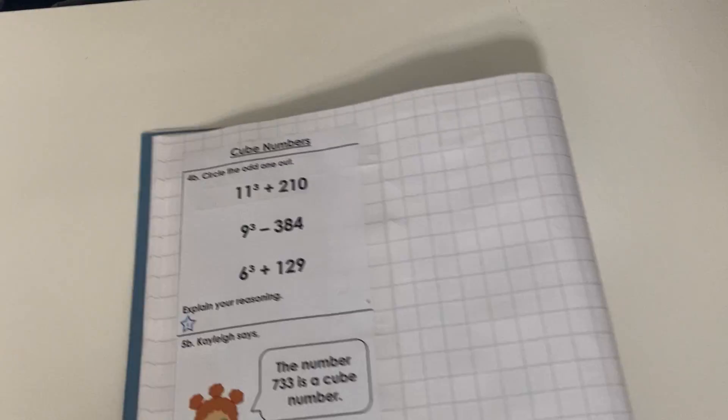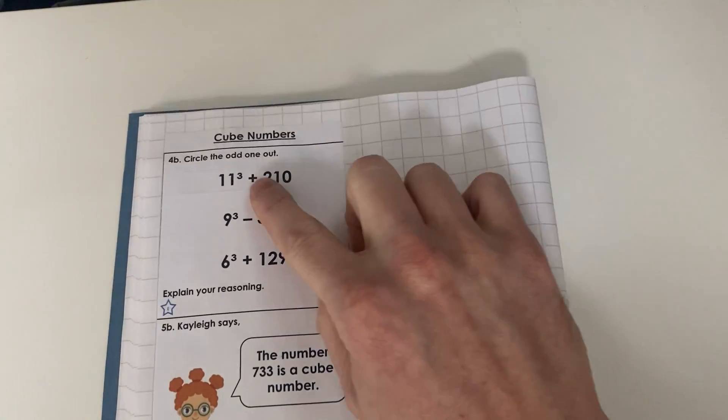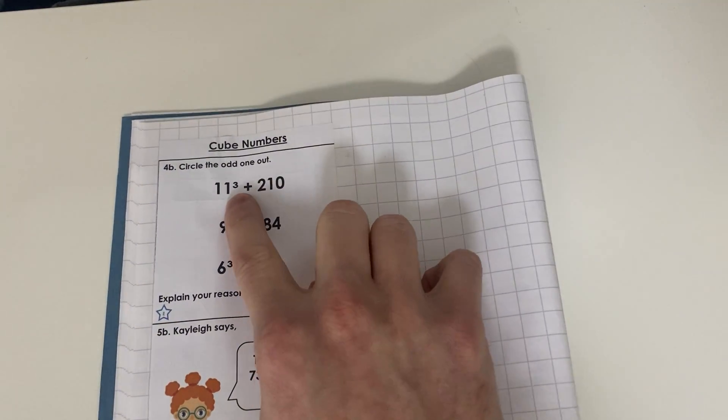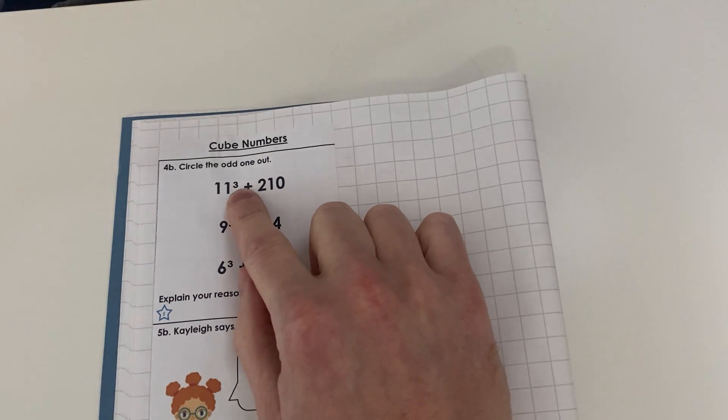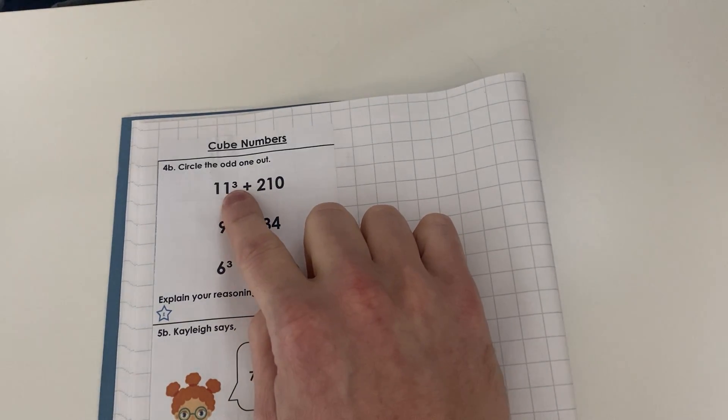So today's learning, children, as I said, we're going to look at cube numbers and what I mean by the notation of cube is this small three here. Whenever we see this, that means we must multiply the number by itself and then by itself again.